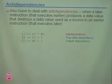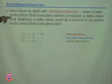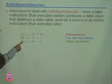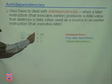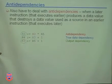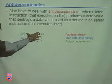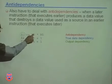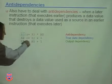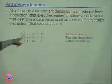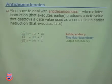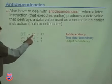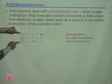There's also the concept of anti-dependencies: when a later instruction produces a value that overwrites a value used as a source in an earlier instruction. For example, if this instruction changes R3 but we used R3 here - if this later instruction executes fast and finishes before the earlier instruction reads R3, we'll get the wrong answer. We want the original value of R3 for both uses. This is called an anti-dependency. We also have the true data dependency and output dependency all shown together.